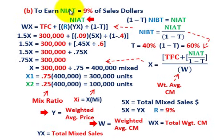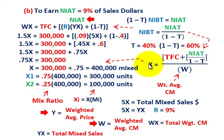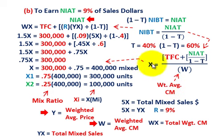Case 2: earn net income after taxes at 9% of sales dollars, with a tax rate of 40%. Net income after taxes equals (1 − tax rate) times net income before taxes. So net income before taxes equals net income after taxes divided by (1 − tax rate), which is 1 − 0.40 = 0.60. Solving for X: total fixed cost plus (rate times total mixed sales divided by 1 minus tax rate) divided by W gives our total mixed units.